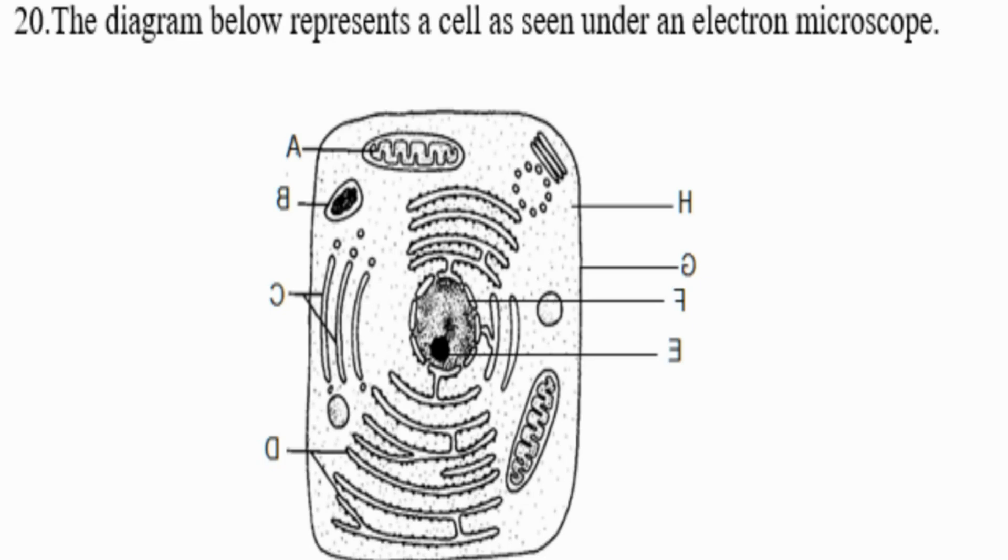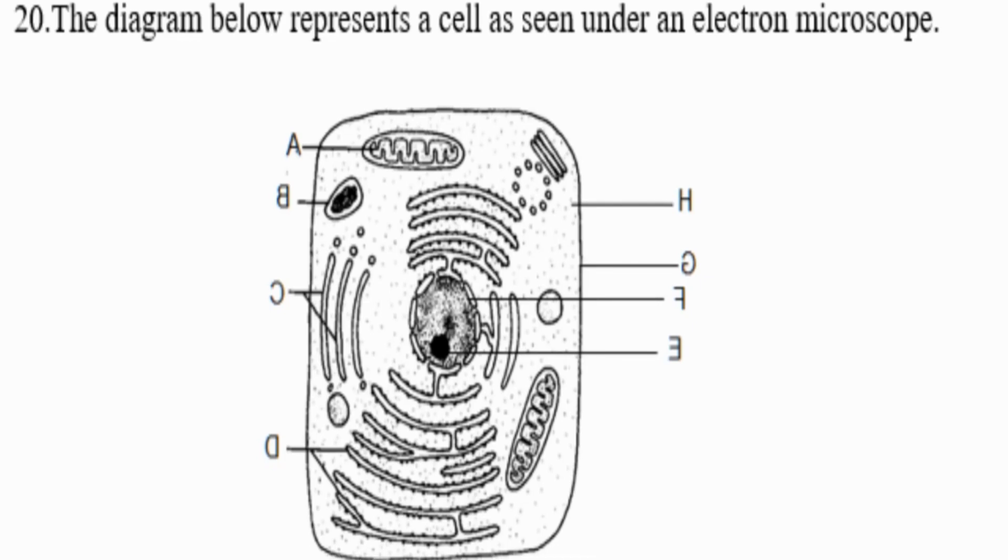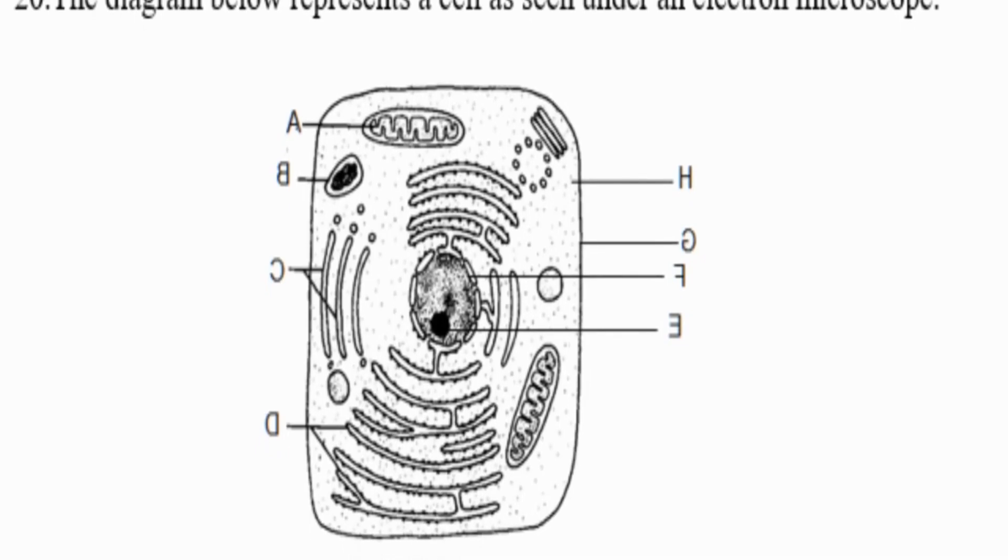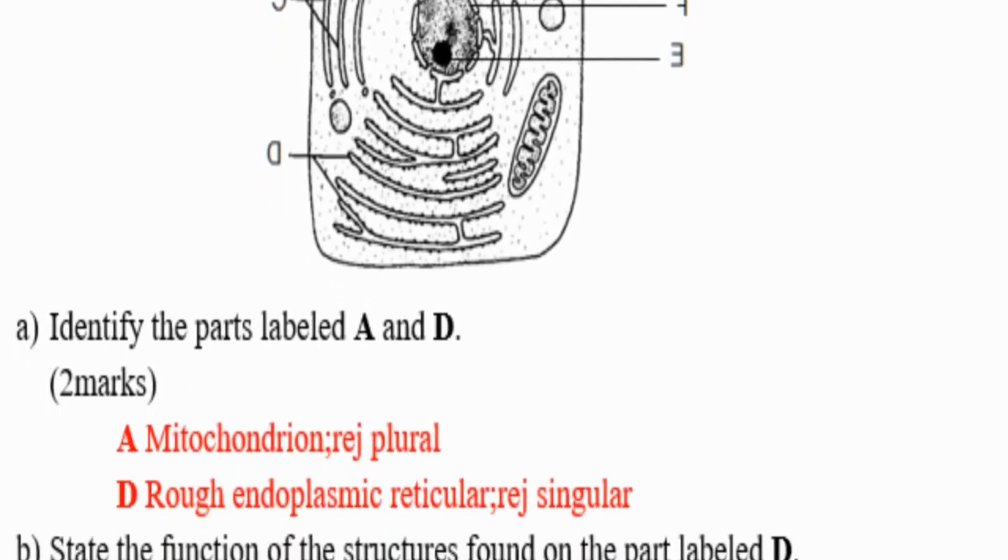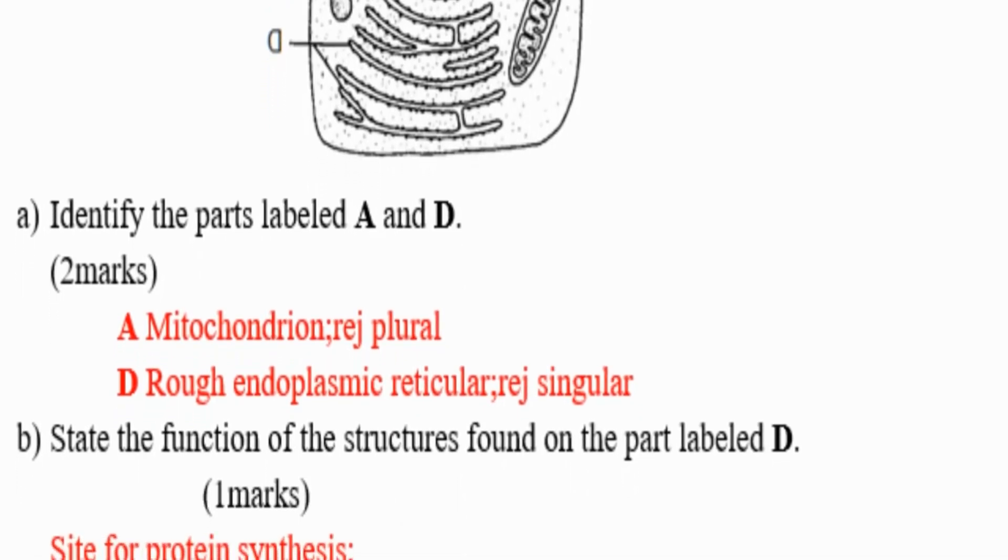The parts are labeled here A, B, C, D, E, F, G, H. For you to be on the safe side, you must keep on looking at these parts. You must know them, how they look like and their functions, because you will not lack a question asking you the functions of different cell organelles.